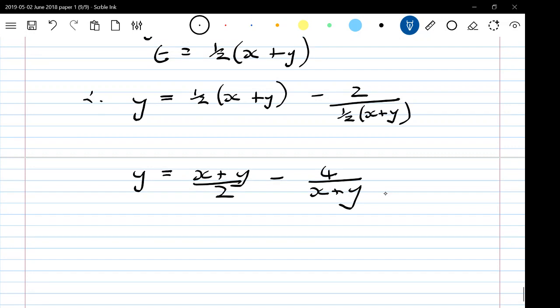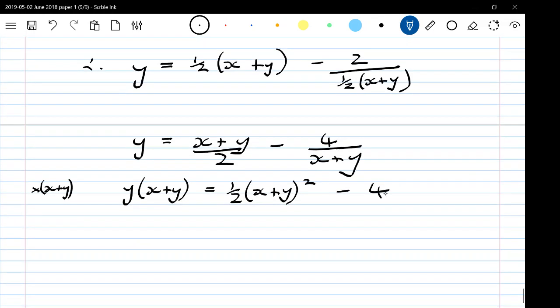I need to get that x plus y from the bottom of my fraction. So I'm going to multiply everything by x plus y to get y times x plus y is half of x plus y squared minus 4.